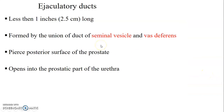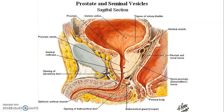The ejaculatory ducts are less than one inch long and are formed by the union of the ducts of the seminal vesicle and vas deferens. They enter the posterior surface of the prostate and open into the prostatic part of the urethra.